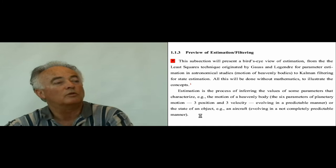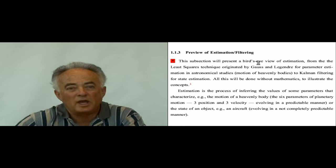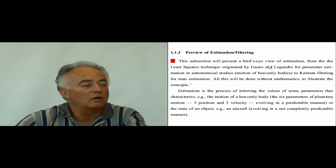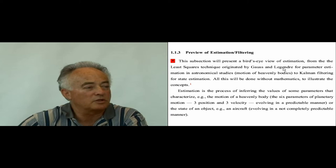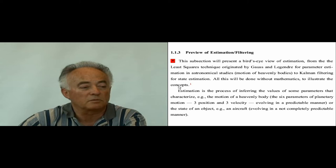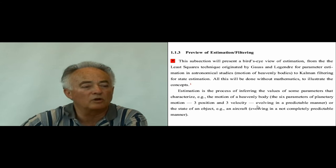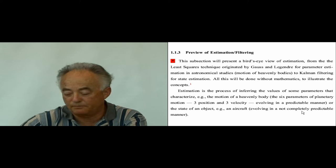We will start with a preview of the estimation and filtering area — a bird's eye view without equations, just presenting how variables relate to each other. We'll go from the least squares technique, originated by Gauss and Legendre for parameter estimation and motivated by the study of motion of heavenly bodies, to Kalman filtering for state estimation, which is the new technology that emerged in the 1960s. The parameters of planetary motion are three position and three velocity components, evolving in a predictable manner, while an aircraft state evolves in a not completely predictable manner.